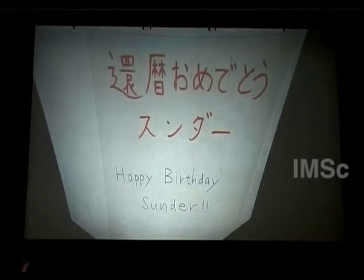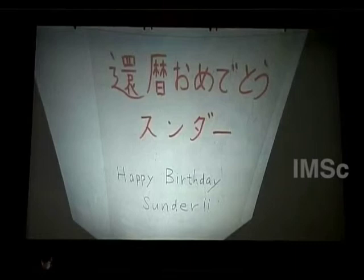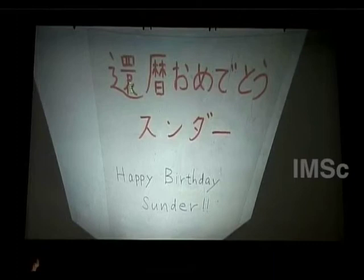It consists of two Chinese characters. The first character is 'kan,' meaning 'ring' — so in Japanese, a von Neumann algebra is called a 'kan.' The second character is 'reki,' meaning 'calendar.' So together, 'kanreki' is a sort of 'ring calendar.'